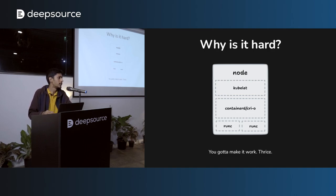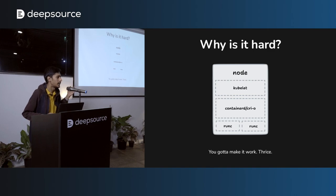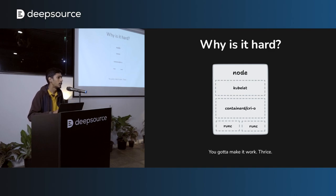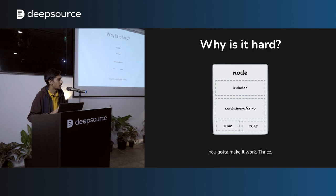In the context of Kubernetes, why is checkpoint and restore hard? This is a typical structure of a Kubernetes node: every node has a kubelet, the node agent, which interacts with a high-level container runtime — generally containerd or CRI-O — and that in turn talks to a low-level container runtime, usually runc. Whenever you want to create a container, the request goes through the Kubernetes API, interpreted by the kubelet, passed to the high-level runtime, then to the low-level runtime, which actually spawns the process. The problem is you need to consistently add checkpoint-restore support at every level of this hierarchy.